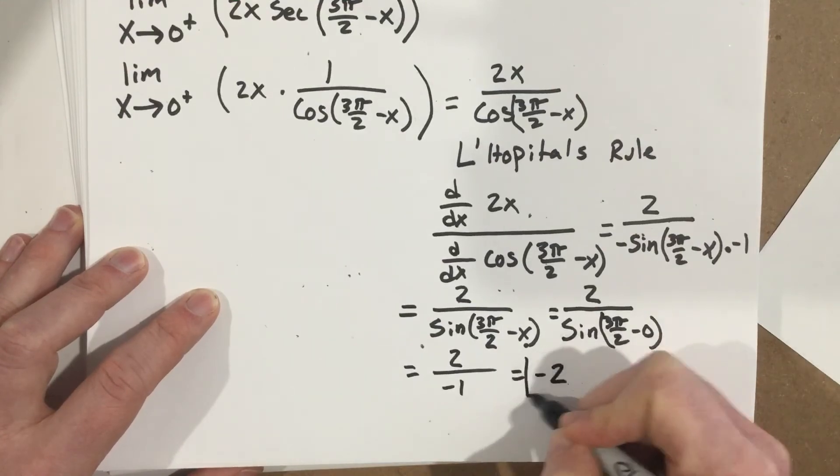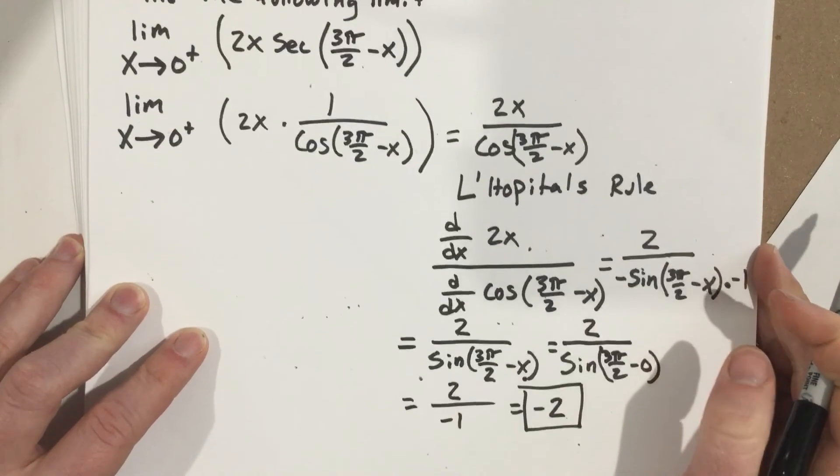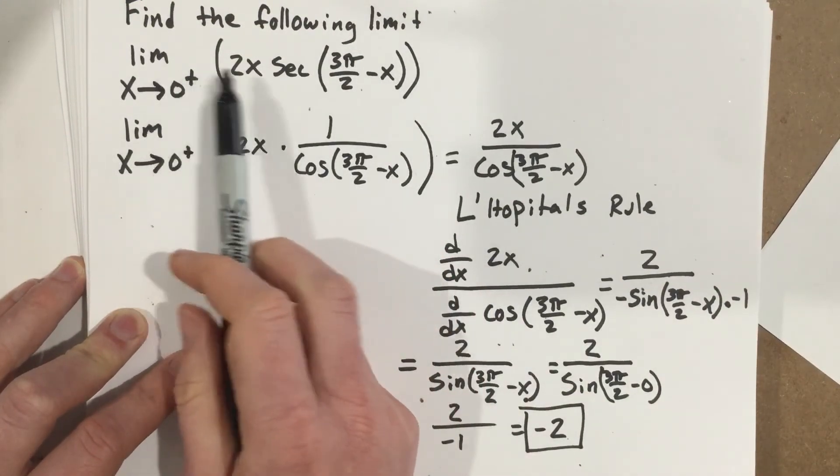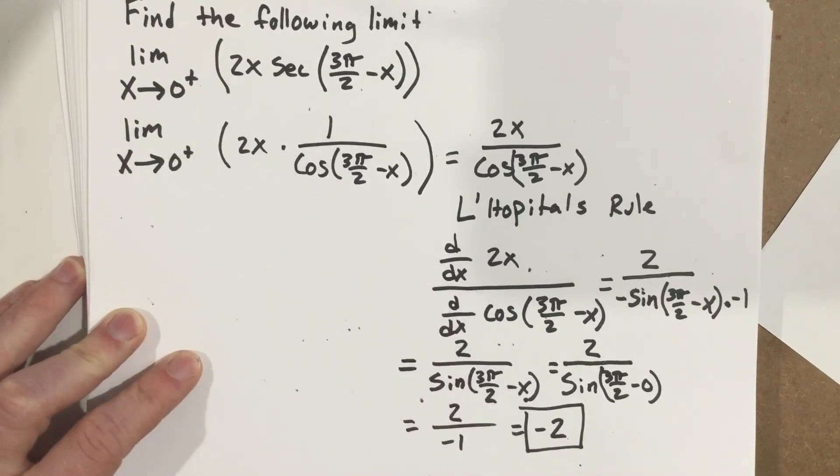So my limit, after using L'Hopital's rule, for the original function. The limit as x approaches 0 from the right of 2x secant 3π over 2 minus x is negative 2.